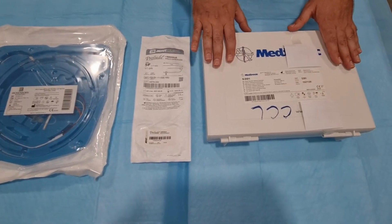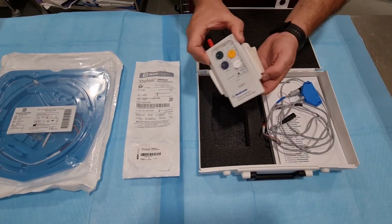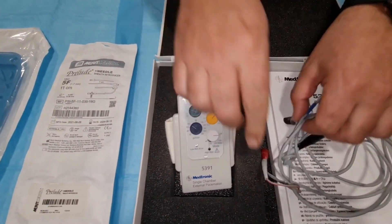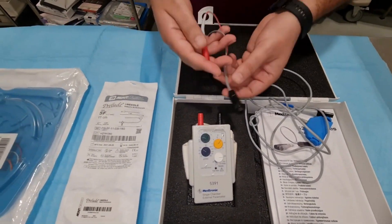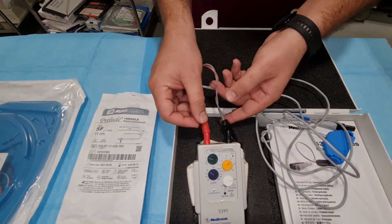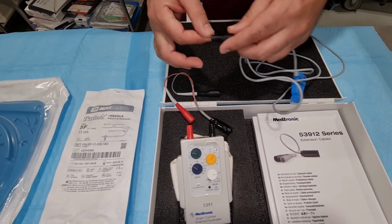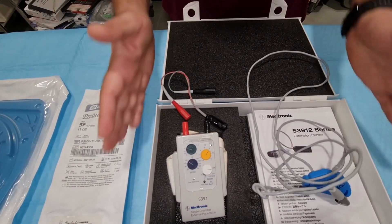This is the generator. This is the Medtronic generator we will use for the pacing purpose. This is the connection. We will connect it with this. Now, I will show you how to connect it with the TPM lead. These are the parts of the generator.